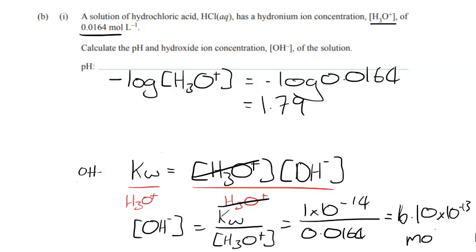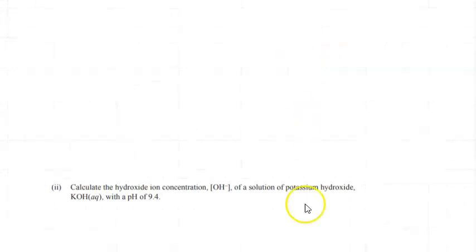Because it's a concentration, we're talking about moles per liter. So pH doesn't have units, but concentration does, mole per liter. Okay, let's go on to another question, maybe a little bit harder.